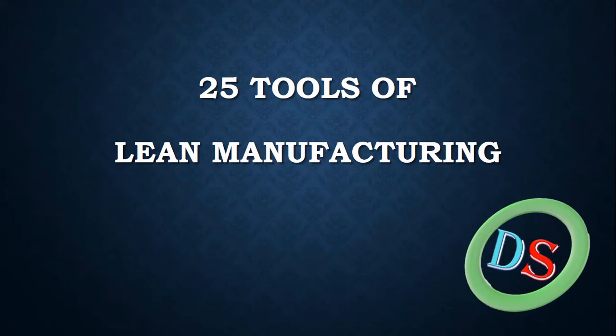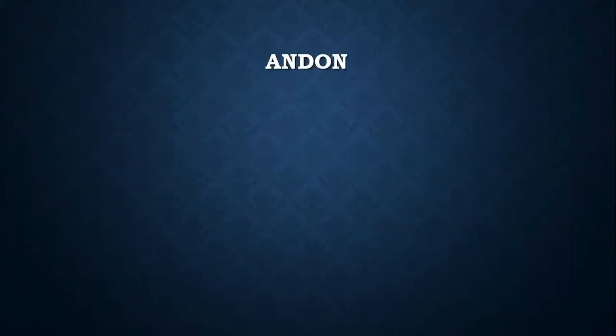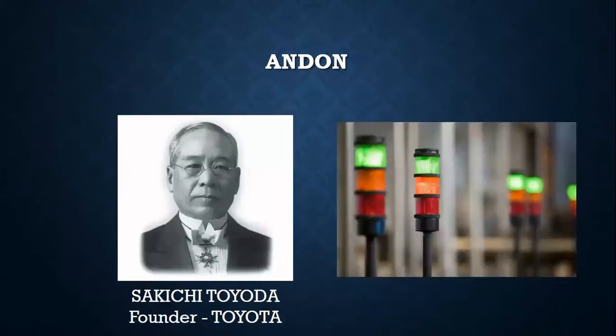Hello viewers, welcome back to your online classroom of manufacturing. Presently we are learning 25 tools of lean manufacturing. The tool for this video is Andon, a notification tool. Andon came from the House of Lean, that is Toyota Motor Company, and you have seen them as multicolor lights in factories or even in routine daily life as well.